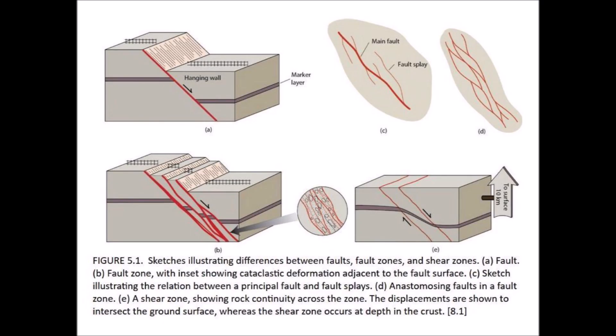This figure from Section 5 of the book illustrates faults on the left and shear zones on the right. At the low temperatures near the surface, geologic forces cause the rocks to break, creating faults. At the higher temperatures encountered below 10 kilometers from the Earth's surface, the rocks undergo a plastic flow that produces shear zones but no breakage when a force is applied.